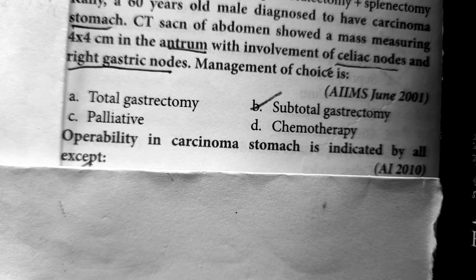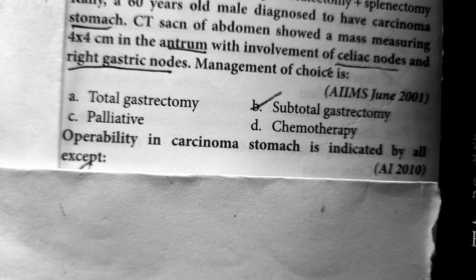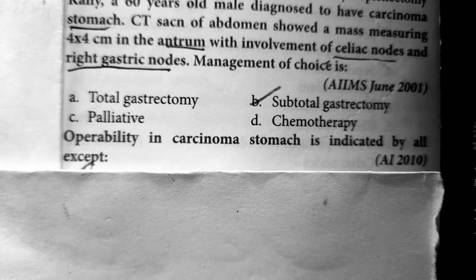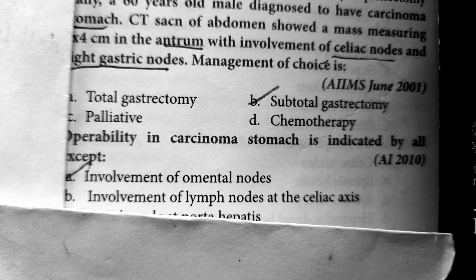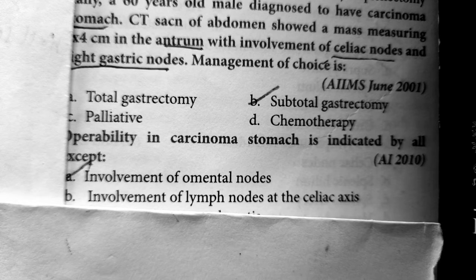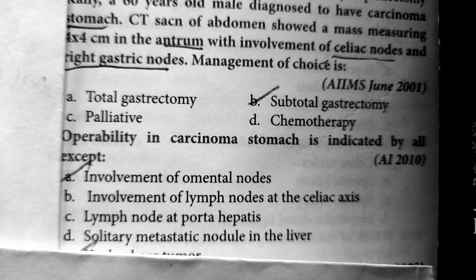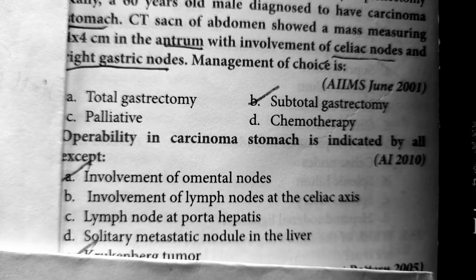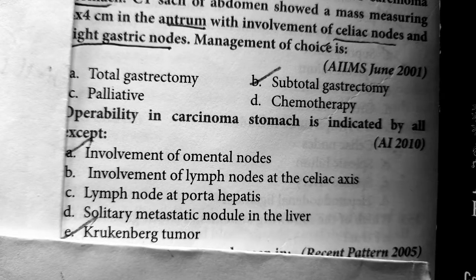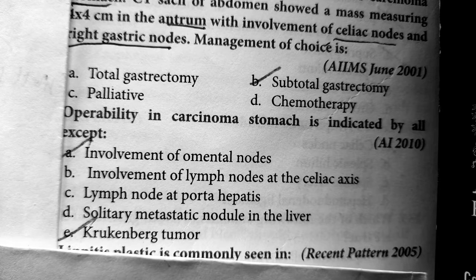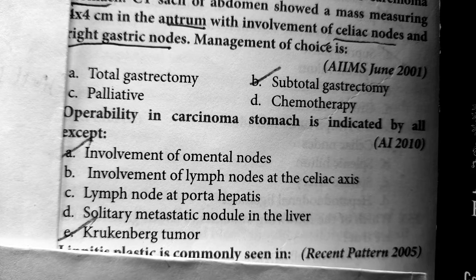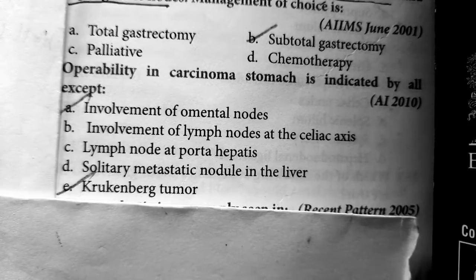Question 8: Operability in carcinoma of the stomach is indicated by all except — involvement of omental nodes means we cannot operate. Involvement of lymph nodes at the celiac axis: we can operate. Lymph nodes at porta hepatis: we can operate. A solitary metastatic nodule in the liver can be resected. However, Krukenberg's tumor and involvement of omental nodes indicate inoperability — you should not operate in this stage.